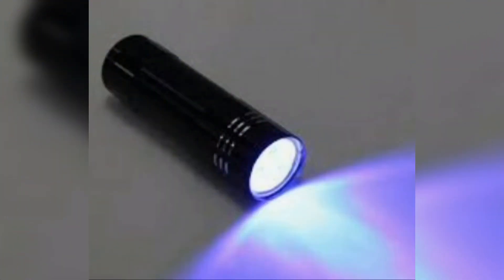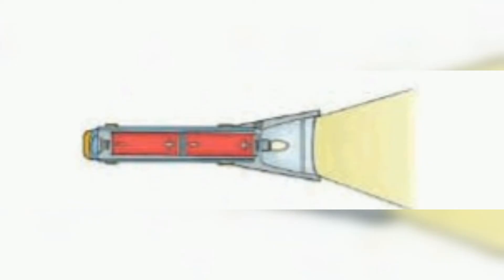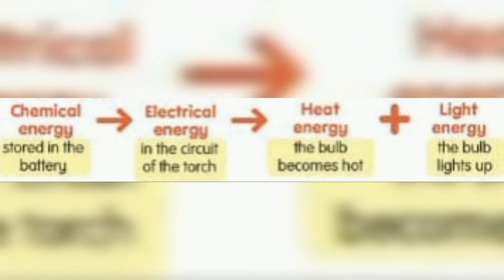Switching on a torch: when you switch on the torch, the chemical energy in the battery transforms to electrical energy. Then, electrical energy transforms to heat energy and light energy.